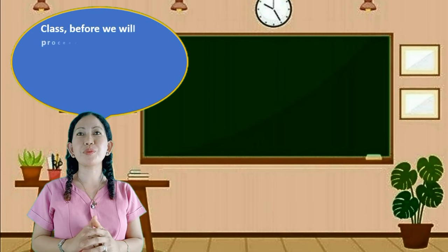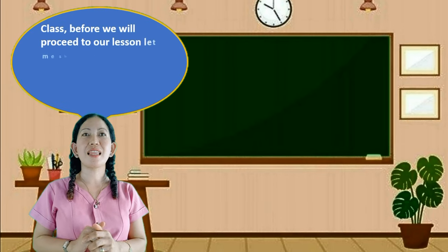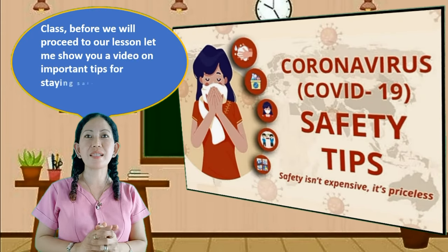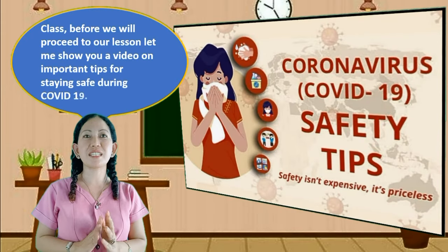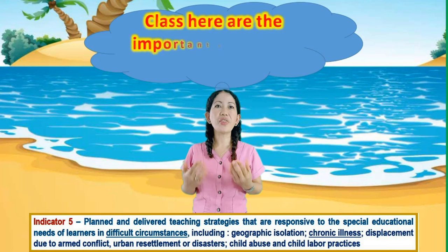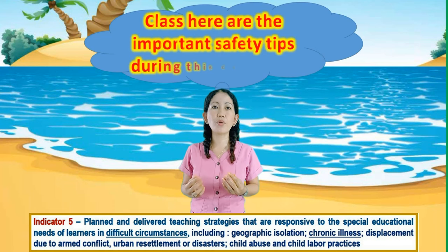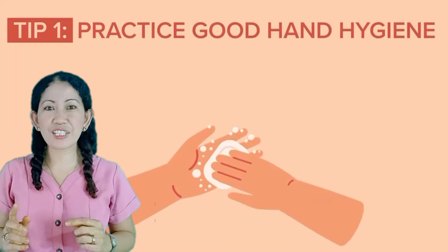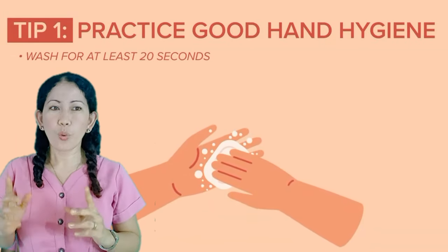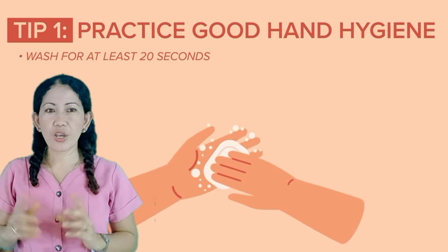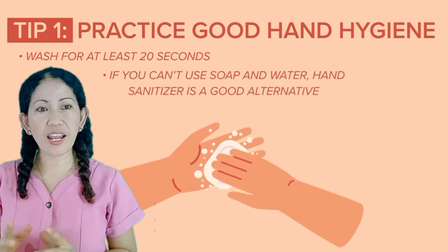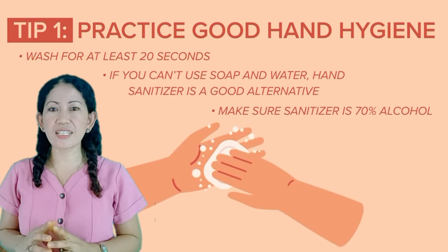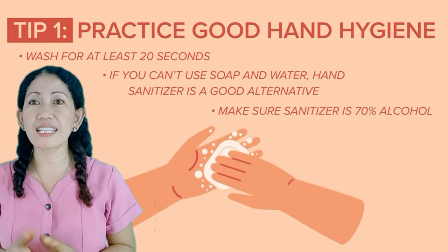Class, before we proceed to our lesson, let me show you a video on important tips for staying safe during COVID-19. Here are the important safety tips during COVID-19. Tip 1: Practice good hand hygiene. Wash for at least 20 seconds. If you can't use soap and water, hand sanitizer is a good alternative. Make sure the sanitizer is 70% alcohol.